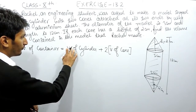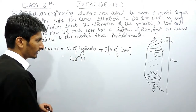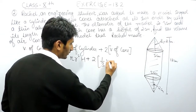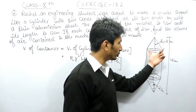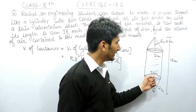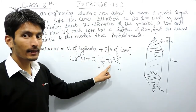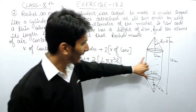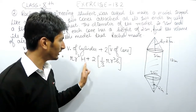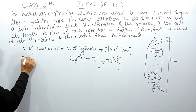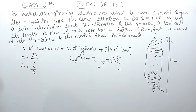Now if you know the formulas, you can easily solve these questions. The volume of the cylinder is π r² h. The diameter of the cone and the diameter of the cylinder are equal, so the radius will also be equal in both cases. But the height is not the same for both figures — the height of the cylinder and the height of the cone are different, so I have used different variables for height. The radius will be half the diameter: diameter is 3 cm, so radius = 3/2 cm.